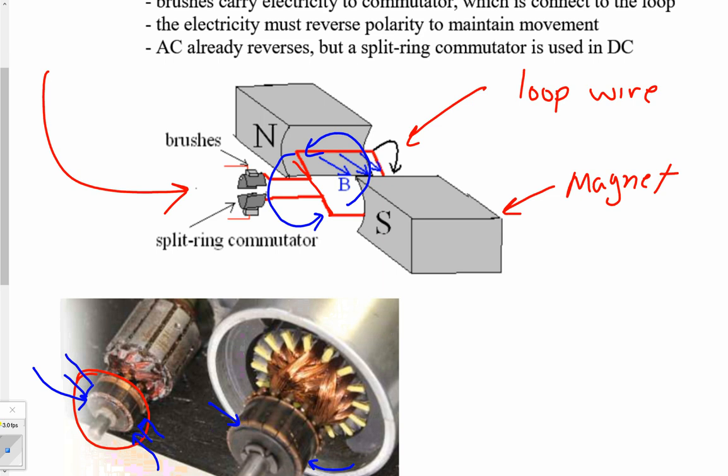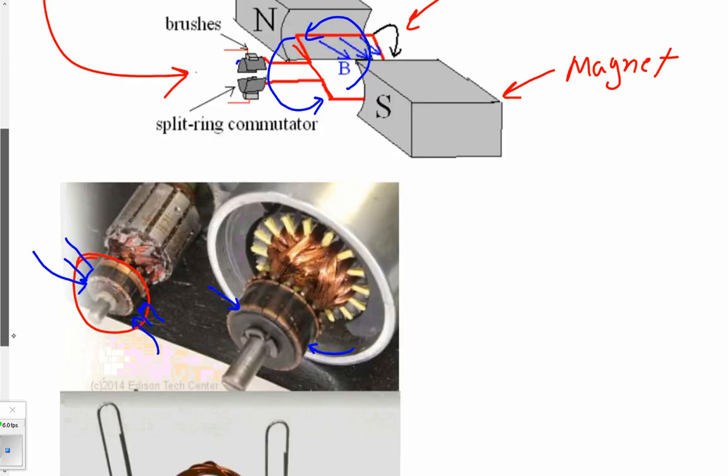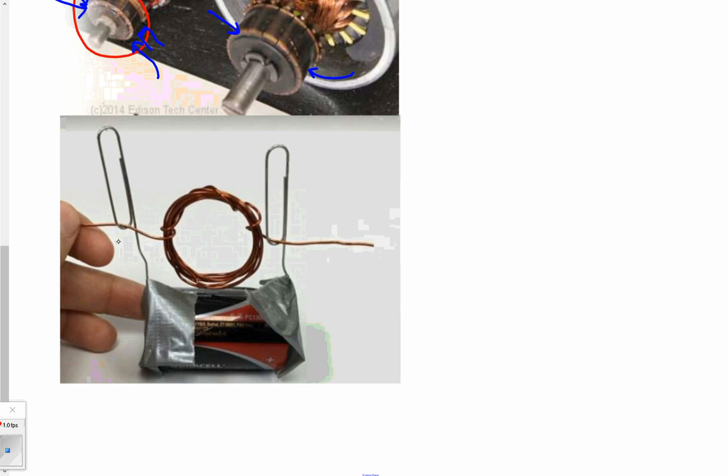AC motors actually don't require this split ring commutator because in AC motor, you've already got a reversing of polarity due to the changing field. Now this is cool. So I was going to give you one last challenge before I get out of here today. Make an electric motor yourself. Now there is one catch.